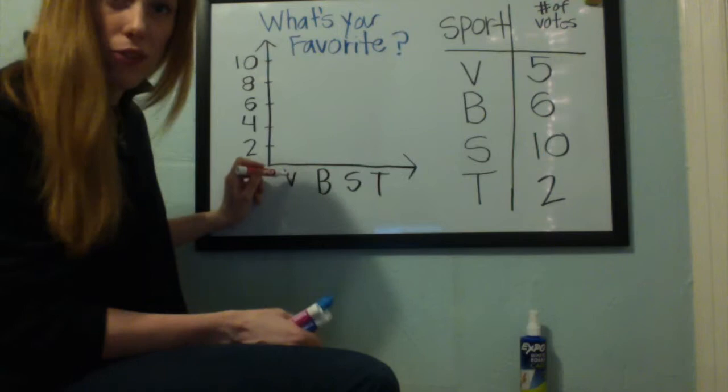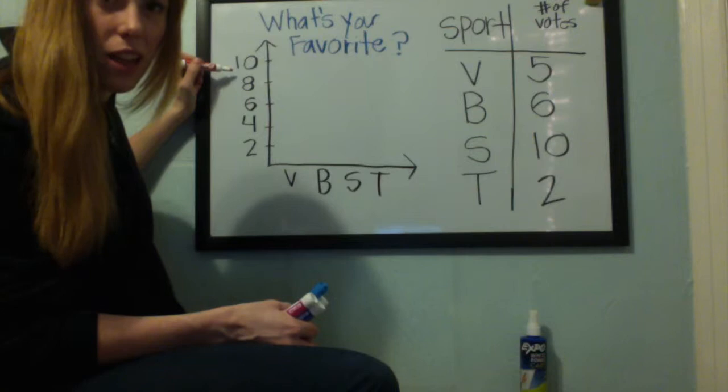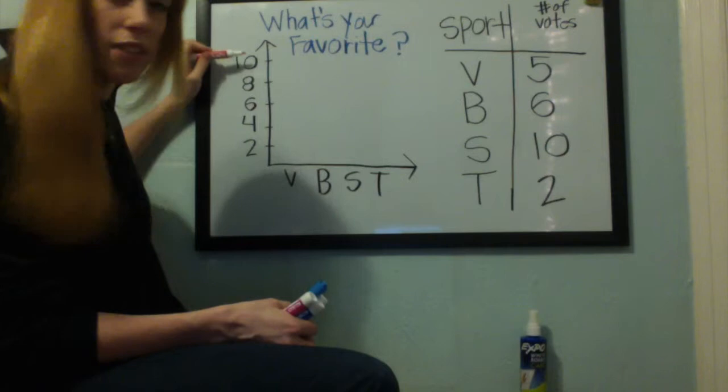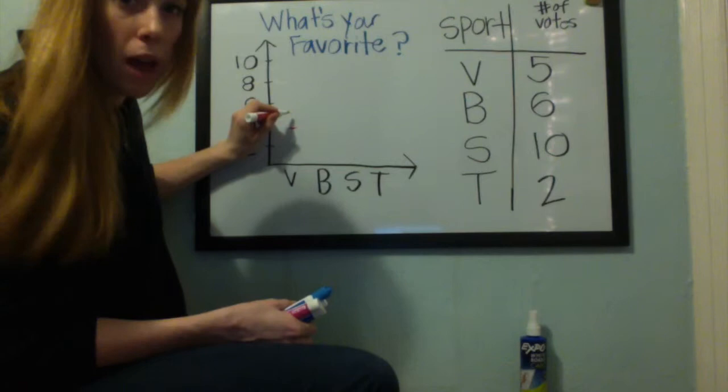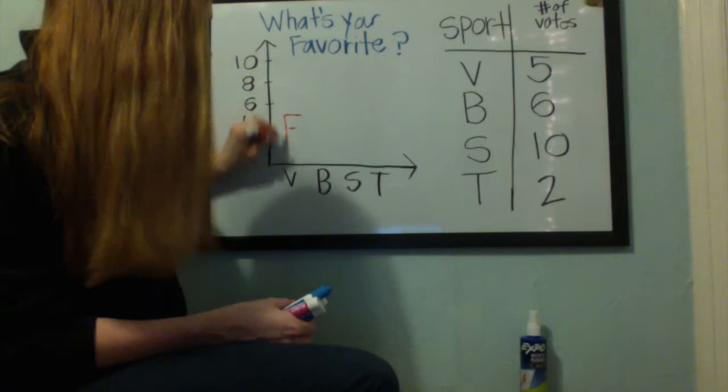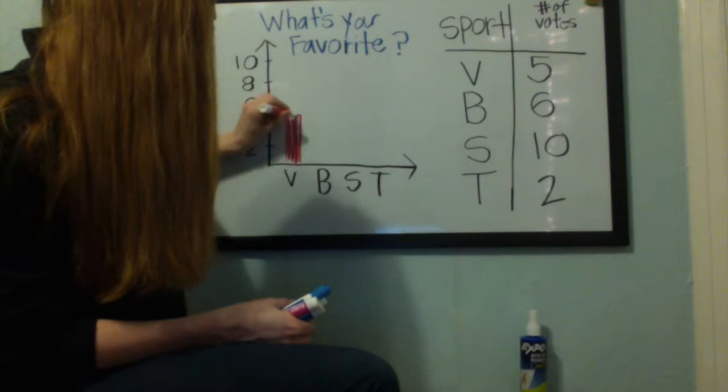The scale on the left has an interval of two: two, four, six, eight, ten. So it goes by an interval of two. For volleyball, we see that it's at five. We're going to go up two, four, and halfway to make five. Once you hit the five at the top, you just want to make that rectangular bar going straight down to show that volleyball is going to be five points.